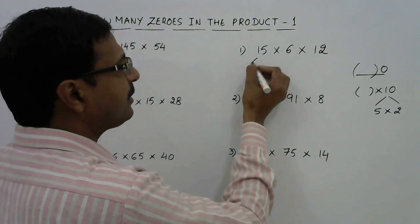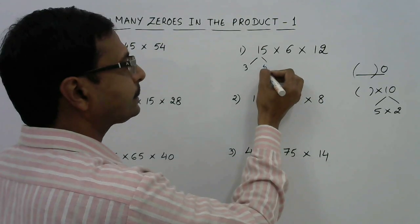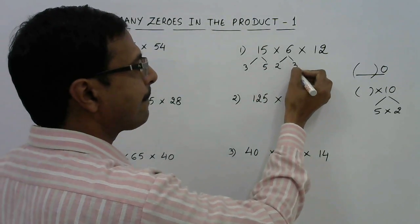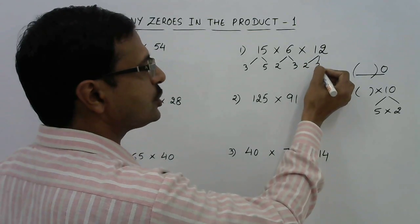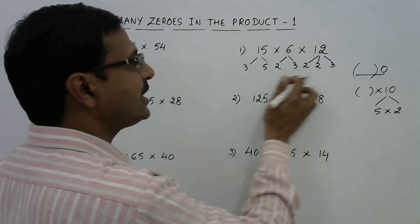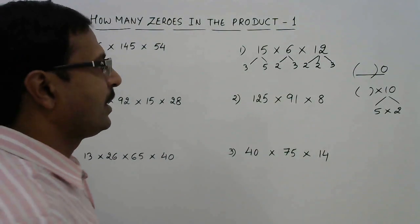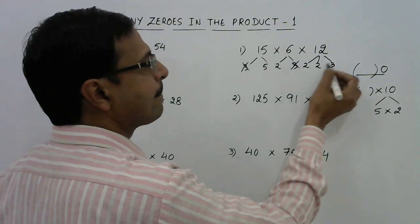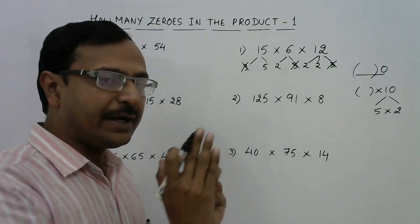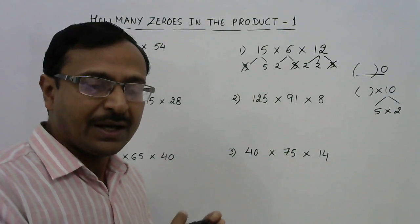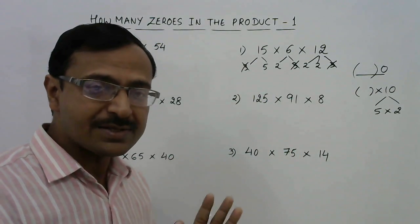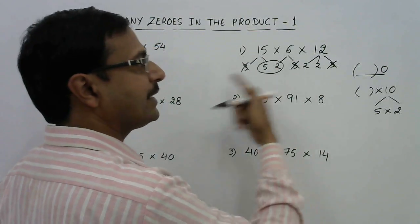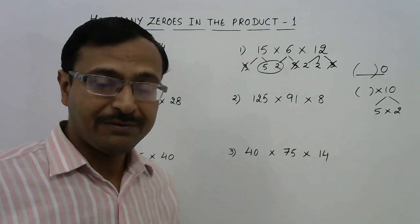Now see: 15 can be factorized as 3 × 5; 6 is 2 × 3; and 12 is 2 × 2 × 3. I will not consider the threes — I will consider only twos and fives. How many pairs of 5 and 2 are made? We have one 5 and one 2 that form one pair.